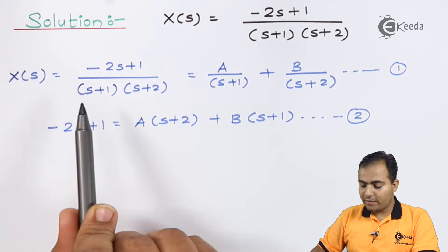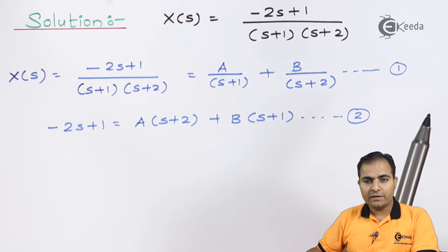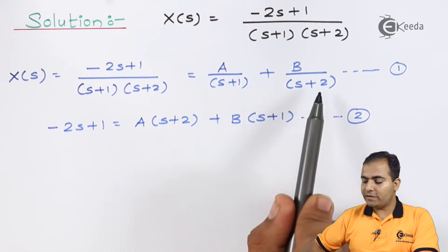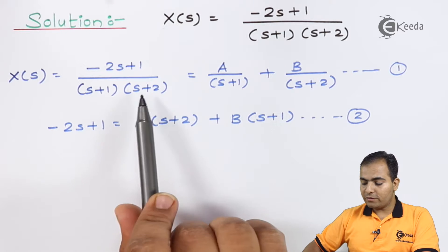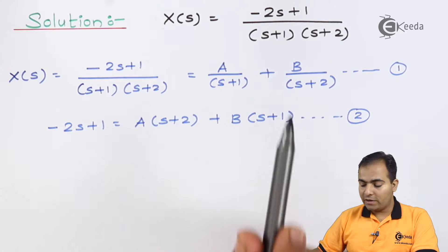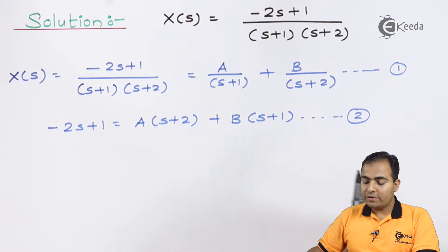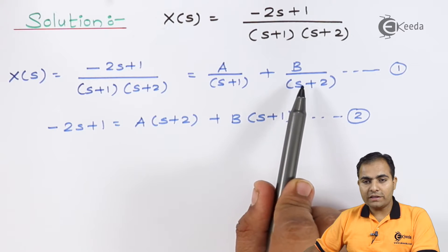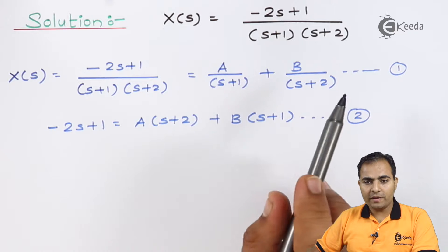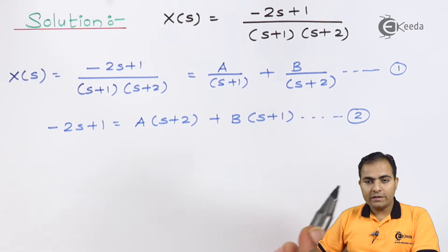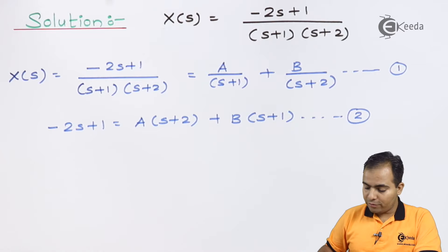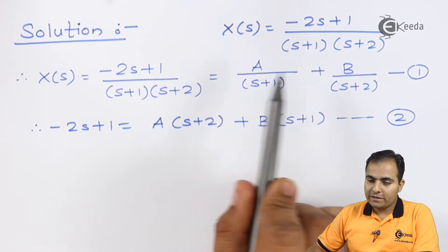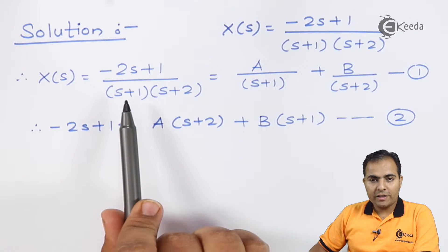After cross multiplication, multiplying the left-hand side denominator on the right-hand side: (s+1)(s+1) will cancel, so A is multiplied by (s+2). Similarly, (s+2)(s+2) will cancel, so B is multiplied by (s+1). Now substitute s = -1 to find A, and s = -2 to find B.